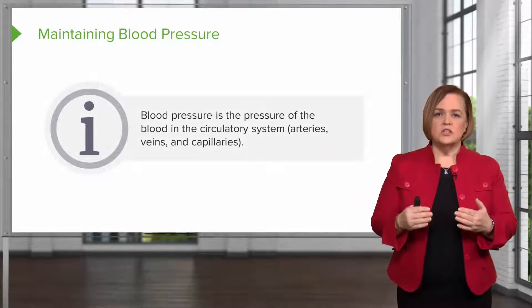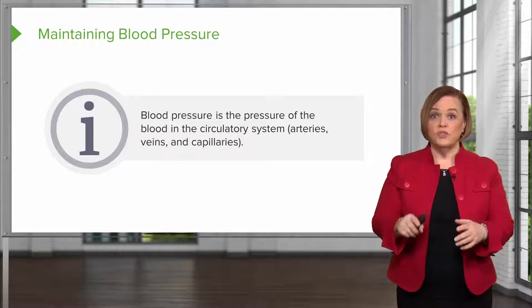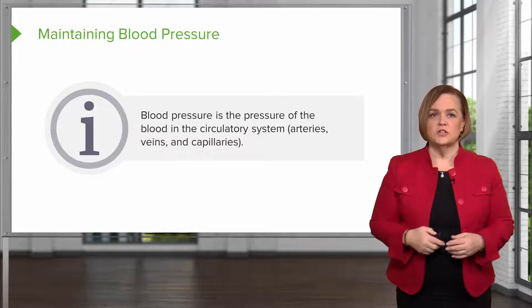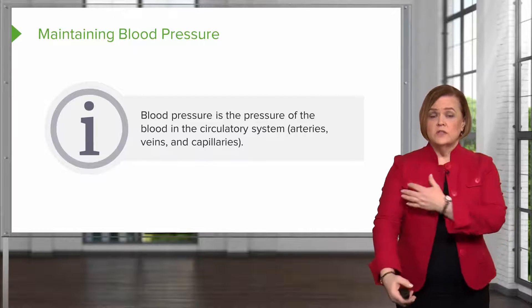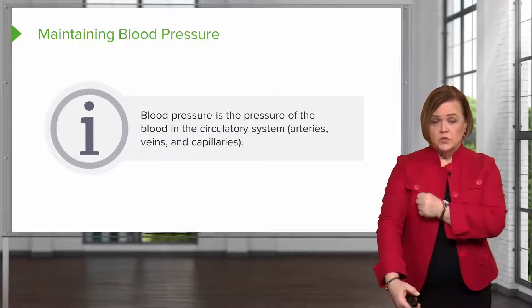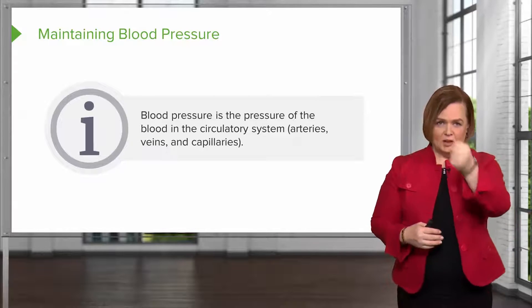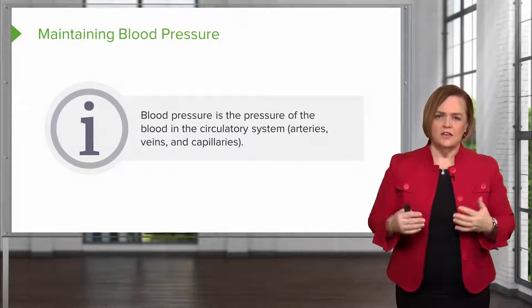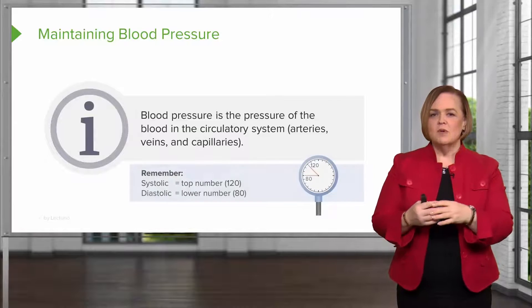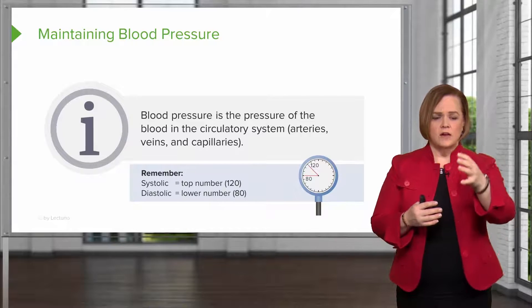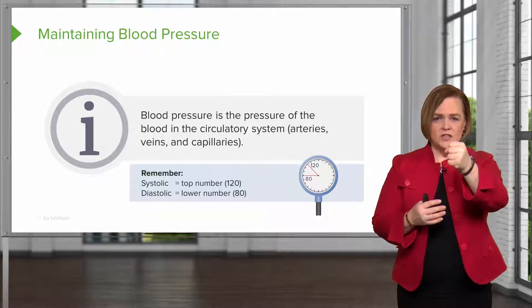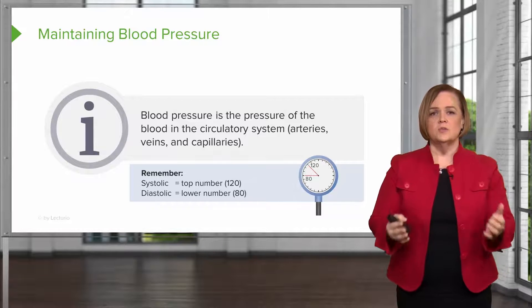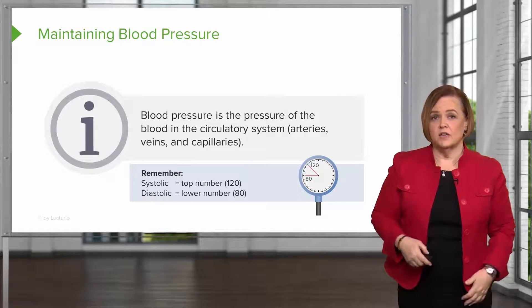Blood pressure is the pressure of blood in the circulatory system — the arteries, the veins, and the capillaries. When you measure a blood pressure using a sphygmomanometer, you're looking at the systolic pressure and the diastolic pressure. The systolic blood pressure is the top number — that's the pressure the heart pushes against the vessels as blood leaves. The diastolic blood pressure is when the heart is getting its own perfusion of oxygenated blood.